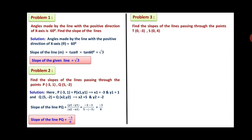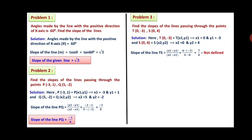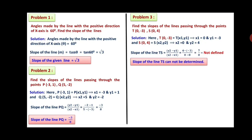Problem 3: Find the slope of the line passing through T(0, −3) and S(0, 4). Here x1 = 0, y1 = −3, x2 = 0, y2 = 4. Slope of line TS = (y2 − y1)/(x2 − x1) = (4 − (−3))/(0 − 0) = 7/0, which is not defined. Therefore the slope of line TS cannot be determined.